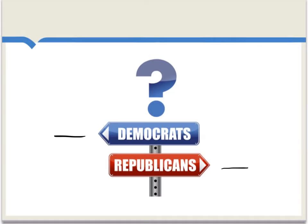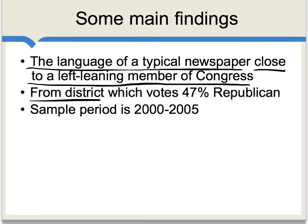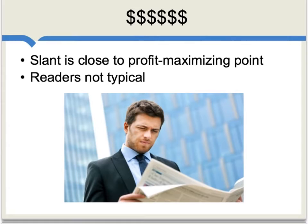Once we can classify newspapers in this way, we have a method for generating some empirical results. Newspapers which use the phrases of Republican congressmen a lot are considered relatively to the right, and newspapers which use the phrases of Democratic congressmen a lot are considered relatively to the left. One main finding is that the language of a typical newspaper is actually pretty close to a left-leaning member of Congress — more specifically, a congressional member from a district which votes at about 47% Republican. This is all from the sample period, year 2000 to 2005, but you can take this as some evidence that a typical newspaper does somewhat lean to the left.